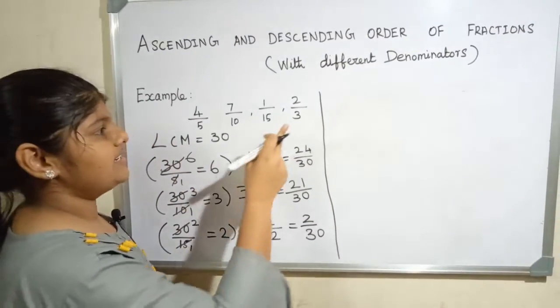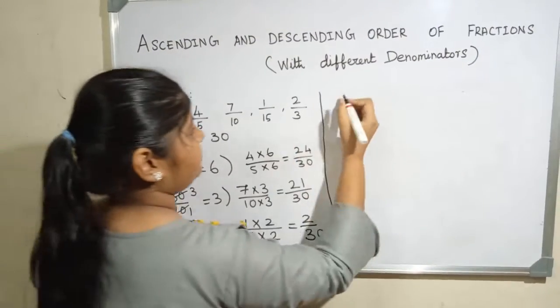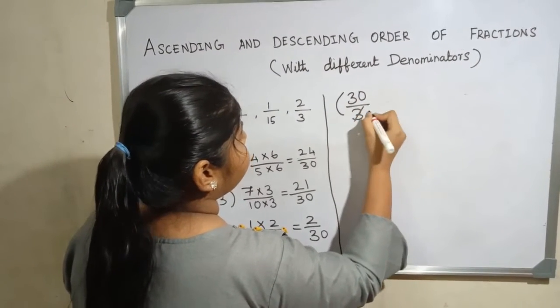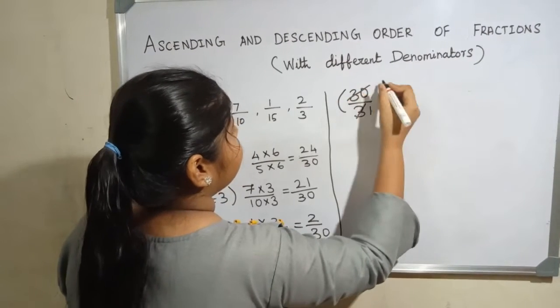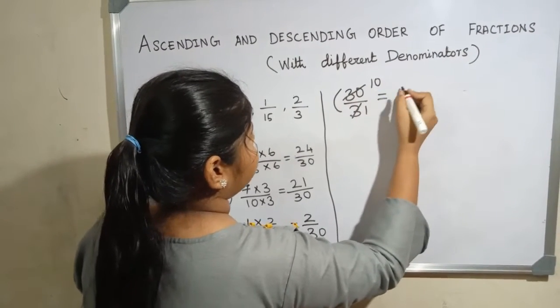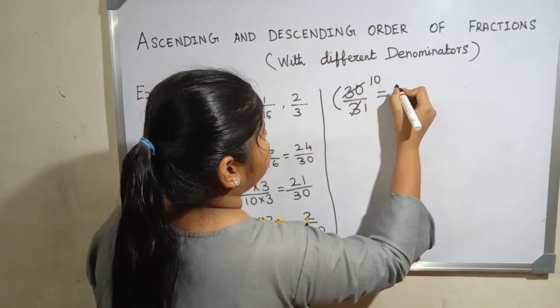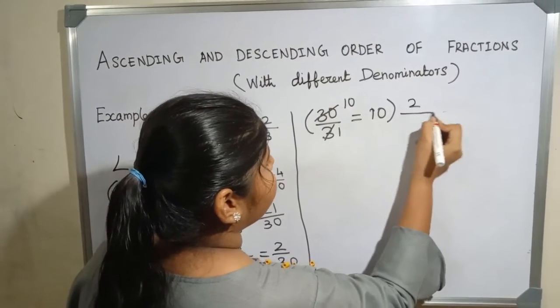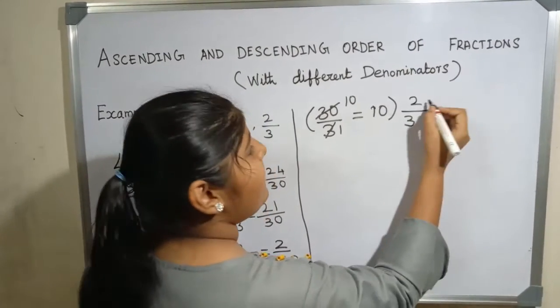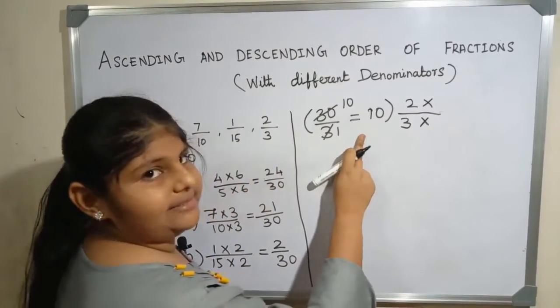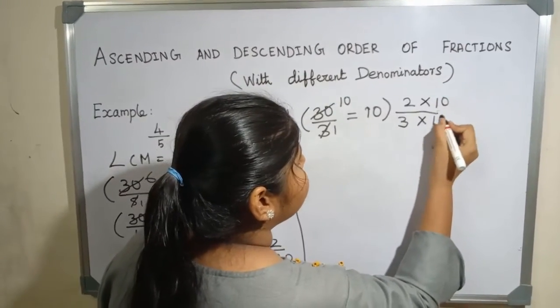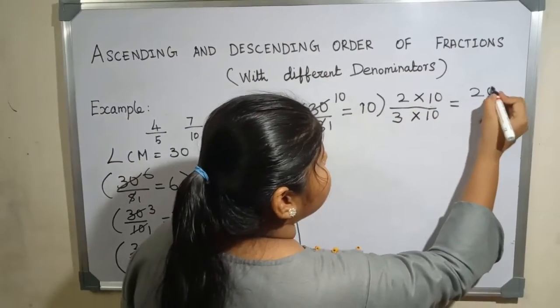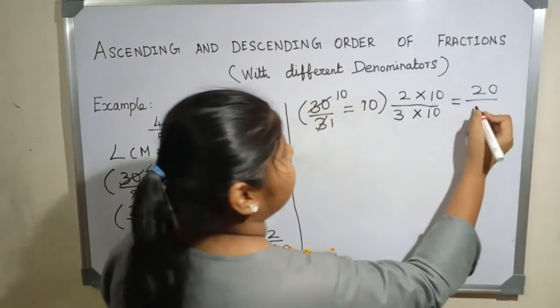The next denominator is 3. 30 by 3. 3 ones are 3, 3 tens are 30. The next fraction is 2 by 3, 2 by 3 multiplied with 10. 2 tens are 20 by 3 tens are 30.